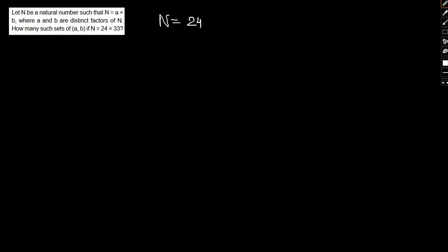We have N equal to 24 times 33. Let me represent the same in terms of its prime factors. 24 can be written as 12 times 2, then 6 times 2, then 3 times 2. So 24 can be written as 2 cubed times 3. And 33 can be written as 3 times 11. Therefore, N can be written as 2 cubed times 3 squared times 11.